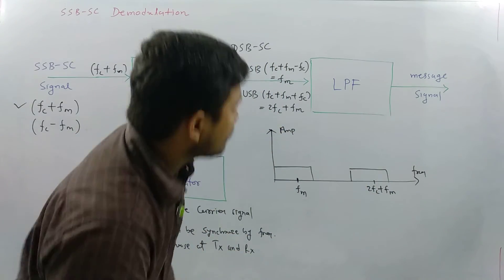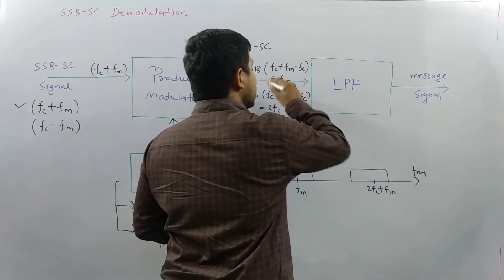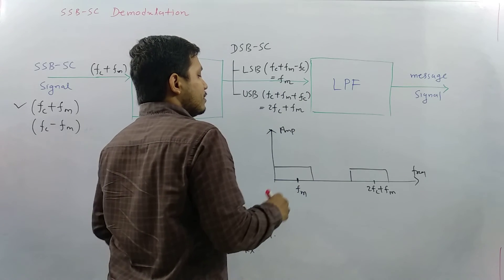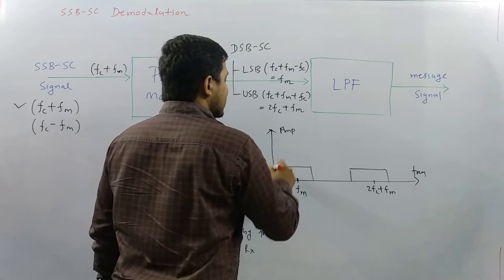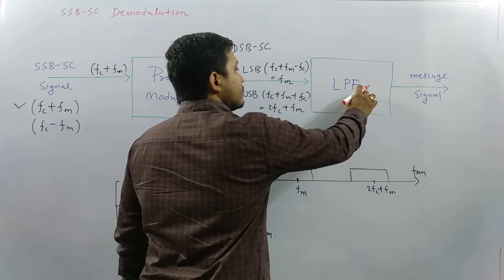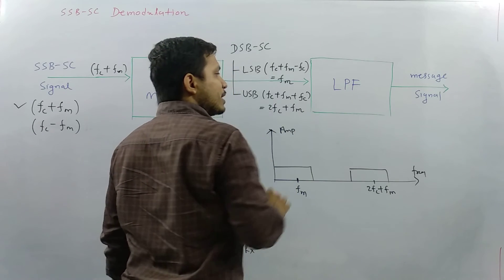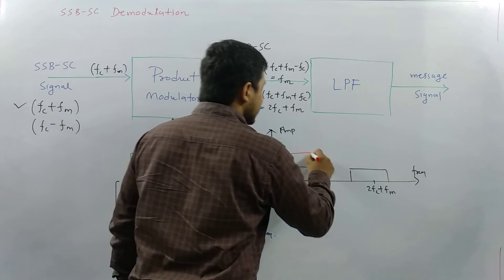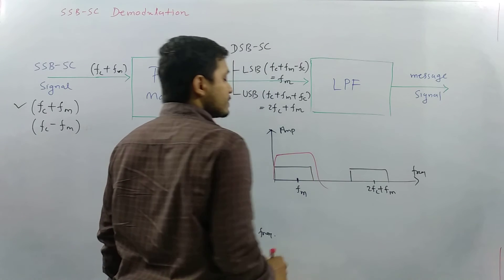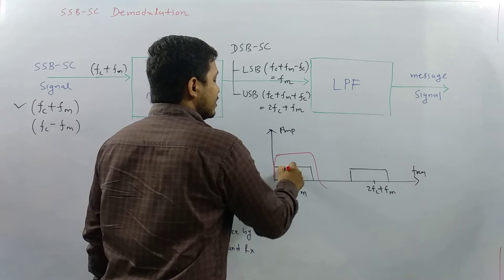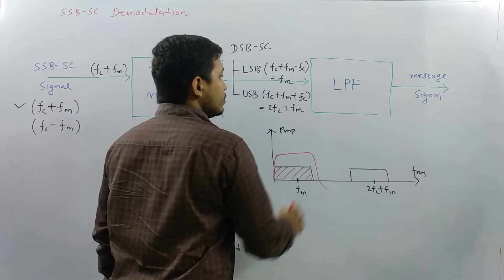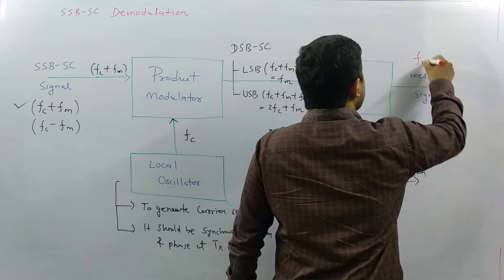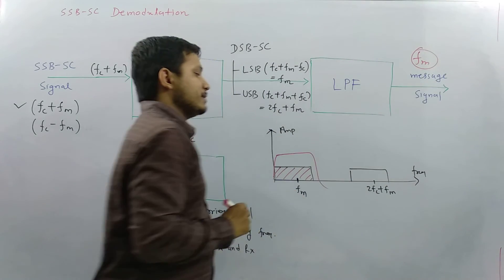When you pass this signal through a low pass filter, the filter only allows the lower frequency components to pass. So only the band at FM passes through, and the output is the modulating signal FM — which carries the original message.